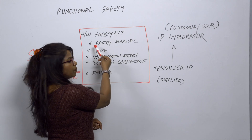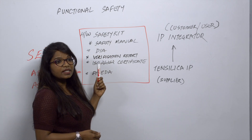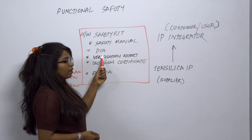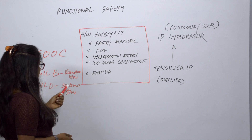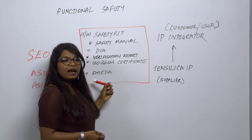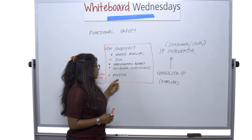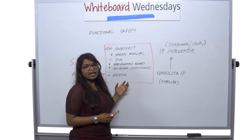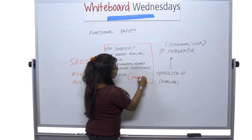These work products, which go to a customer, are what we call the hardware safety kit. We have a safety manual, we have a DIA, we have a verification report confirming we verified the product for the necessary ASIL. We have an ISO 26262 certificate in place, and we have what we call the FMEDA — Failure Mode Effect and Diagnostic Analysis — which is part of the safety analysis.